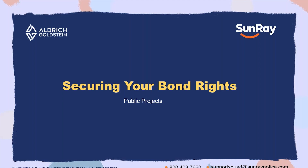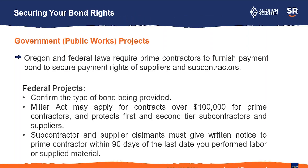You can't lien public projects, but you may have bond rights for public projects. Oregon and federal laws require the prime contractors to furnish a payment bond, and that secures the payment rights of suppliers and subs. If it is a federal project, you're going to be under the Miller Act, which came about in the 1930s as a way to ensure that lower tier contractors and suppliers on a project get paid. The federal Miller Act protects the first and second tier subs and suppliers, and it's for contracts over $100,000. If you have a claim, you've got to get notice within 90 days of the last day that you performed labor or supplied material.